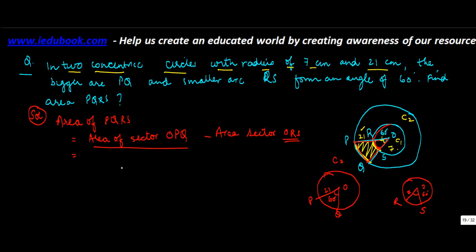Area of sector OPQ will be theta over 360 times π times r, which is 21 squared, minus theta over 360 times π times 7 squared.